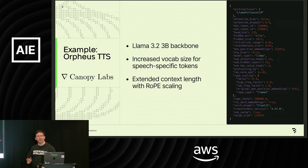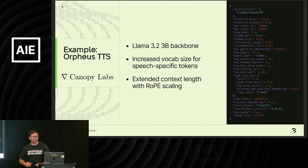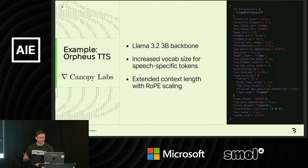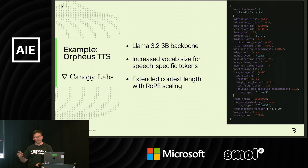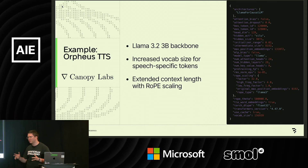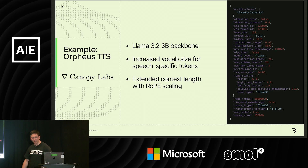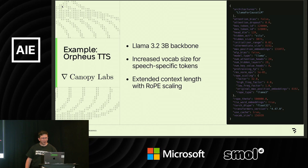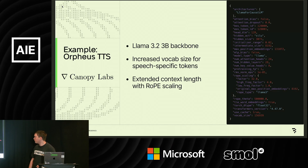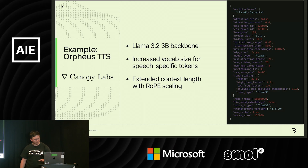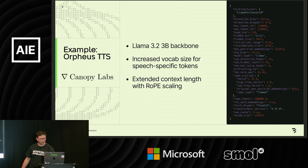They did a couple of things that are relevant here: there's a larger vocab size because you need speech-specific tokens like laugh, and they also extended the context length with RoPE scaling. So we need to make sure everything we do supports that.